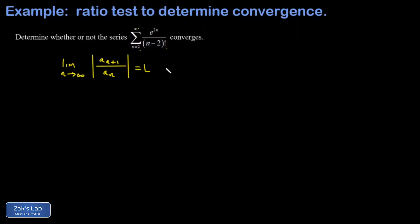If this limit comes out to a number less than 1, we have a convergent series. If it's bigger than 1, we have a divergent series. If it's equal to 1, the test is inconclusive.